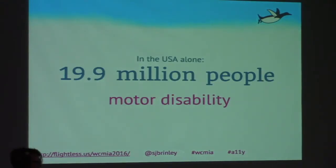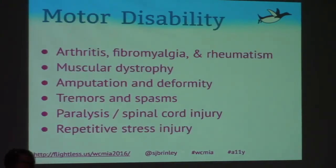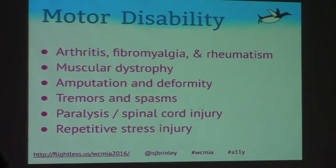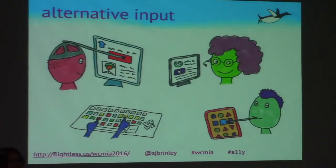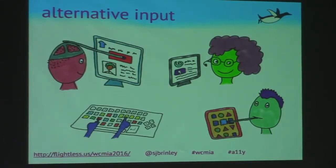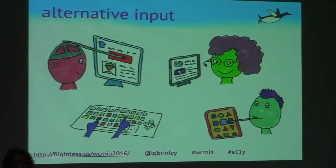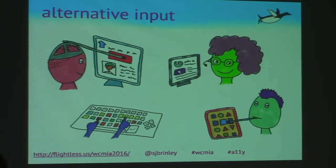Motor disabilities: 19.9 million people in the US have motor disabilities. Some causes include arthritis, fibromyalgia, rheumatism, muscular dystrophy, amputation and deformity, tremors and spasms, paralysis, spinal cord injury, and repetitive stress injury. Many of these people use alternative inputs, such as a head-mounted stylus, an eye-tracking sensor like Stephen Hawking uses, larger simplified keyboards, or styluses that can be used with the mouth.